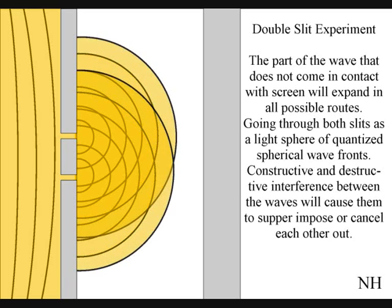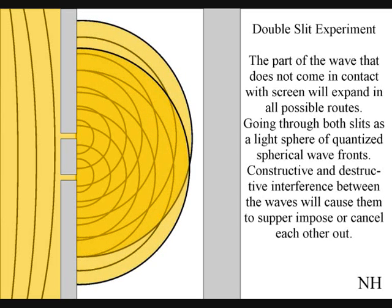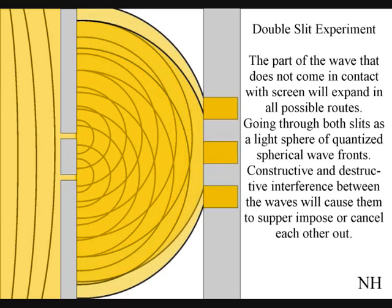Interference between the waves will cause them to superimpose or cancel each other out. When this wave function comes in contact with the screen, it will collapse, creating moments in time and an interference pattern.